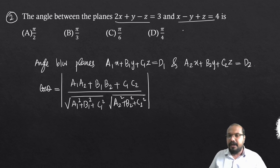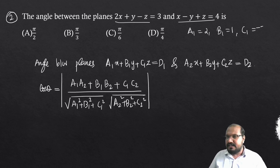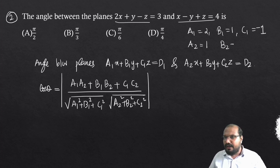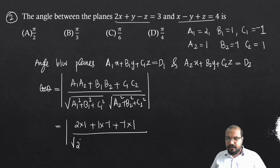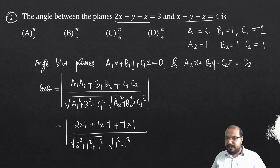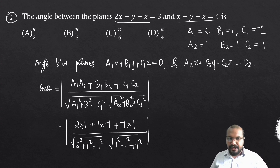We identify the coefficients: a1=2, b1=1, c1=-1 for the first plane and a2=1, b2=-1, c2=1 for the second plane. Substituting: numerator = 2×1 + 1×(-1) + (-1)×1 = 2 - 1 - 1 = 0. The numerator is 0.